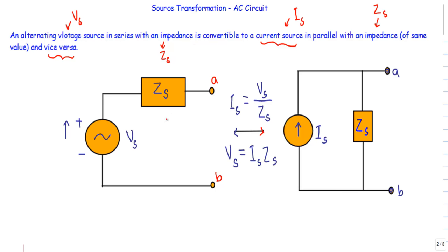Now let me describe this using two figures. Let's say I have terminals A and B. Within these A and B terminals, I have an alternating voltage source Vs connected in series with an impedance Zs. Source transformation theorem states that I can convert this voltage source to a current source in parallel with that impedance. This is the source transformation theorem.